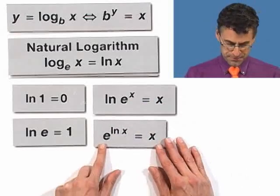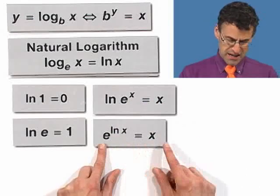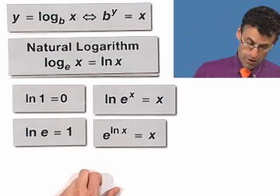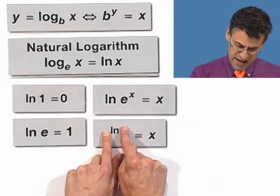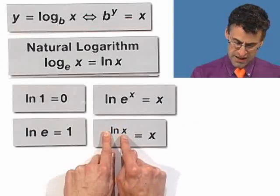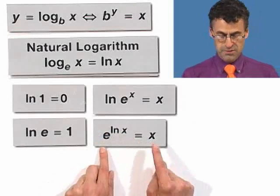And then finally, this is the hard one. e to the natural log of x equals x. And why? Because I'm raising e to an exponent, and that is precisely the exponent I have to raise e to in order to have the answer be x. And so therefore, it equals x.